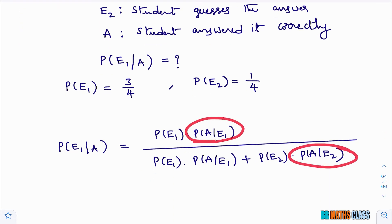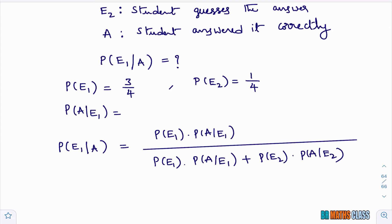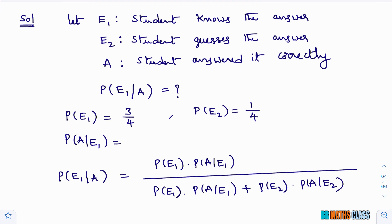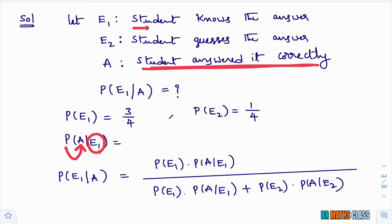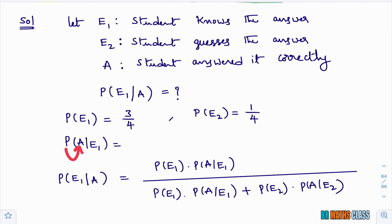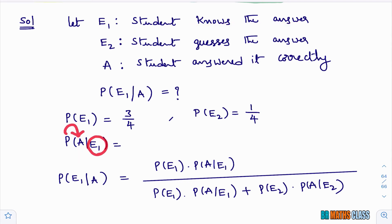Now calculate P(A|E1) and P(A|E2). P(A|E1) is the probability that the student answered correctly given that E1 has occurred — meaning we know the student knows the answer. When a student knows the answer, they will answer it correctly 100% of the time. It is a sure event, so P(A|E1) = 1.